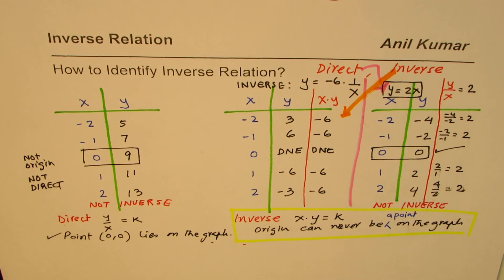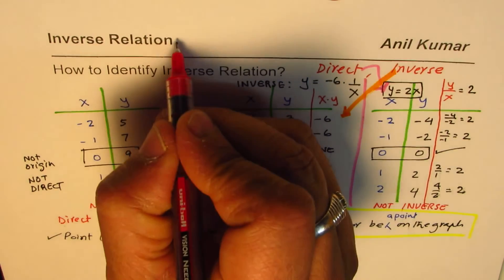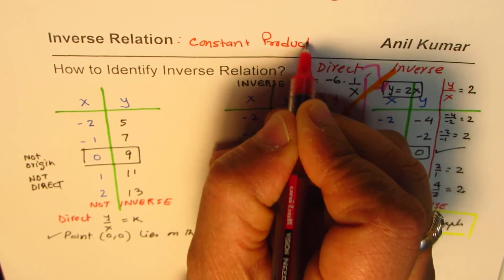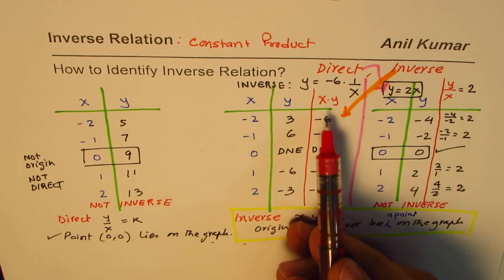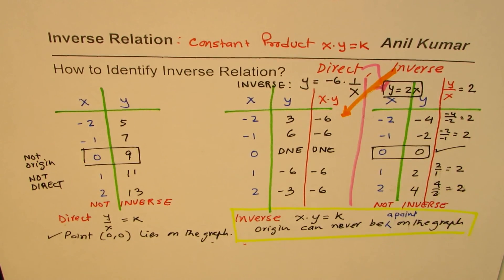To summarize: constant proportion — Y over X equals a constant — identifies a direct relation, while constant product — X times Y equals a constant k — identifies an inverse relation. The equation for inverse becomes x times y = k. I hope that helps you quickly figure out whether given data corresponds to an inverse relation or not. I'm Anil Kumar — please share and subscribe. Thank you and all the best.